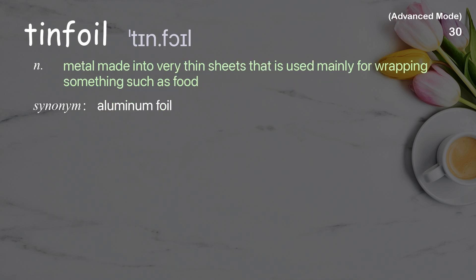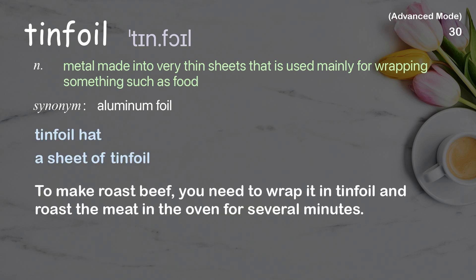Tin foil: metal made into very thin sheets, used mainly for wrapping something such as food. Examples: tin foil hat, a sheet of tin foil. To make roast beef, you need to wrap it in tin foil and roast the meat in the oven for several minutes.